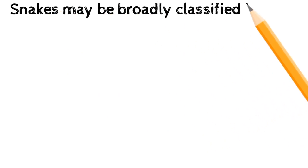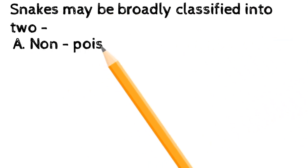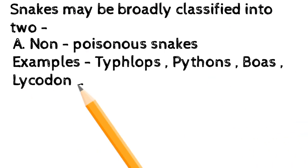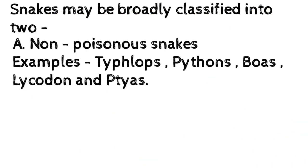This video covers different snakes based on the syllabus of complementary zoology for S2 students. Snakes may be broadly classified into two groups: non-poisonous snakes — examples include Typhlops, Pythons, Boas, Lycodon, and Ptyas — and poisonous snakes.